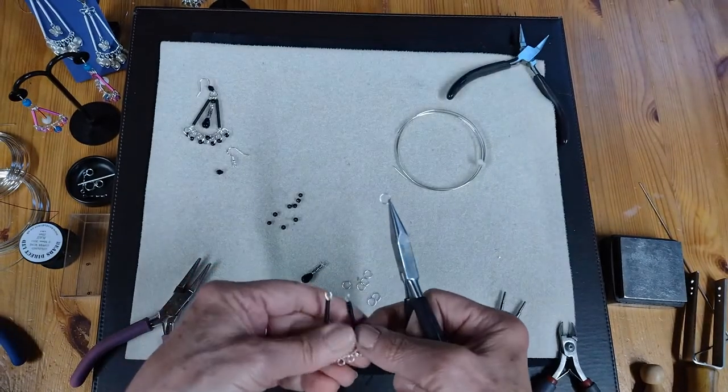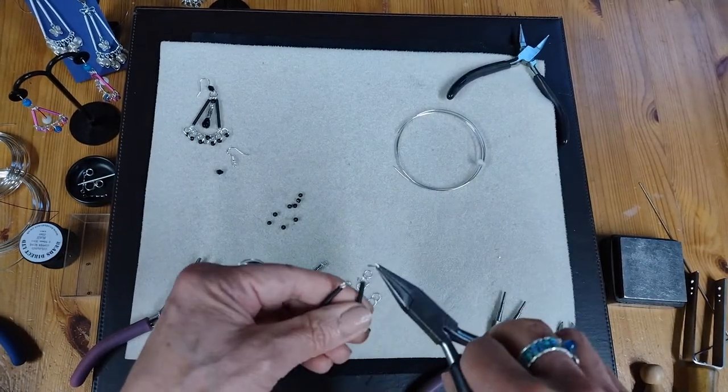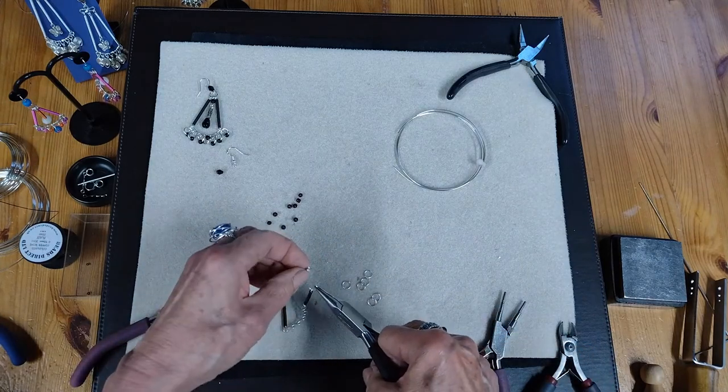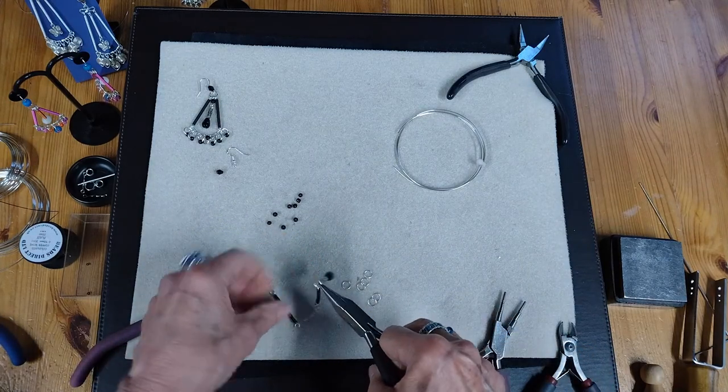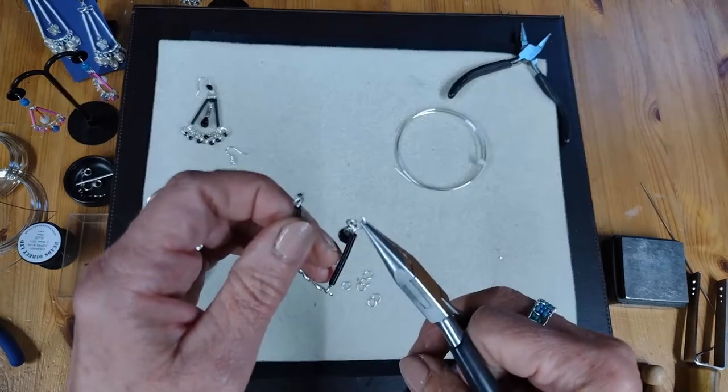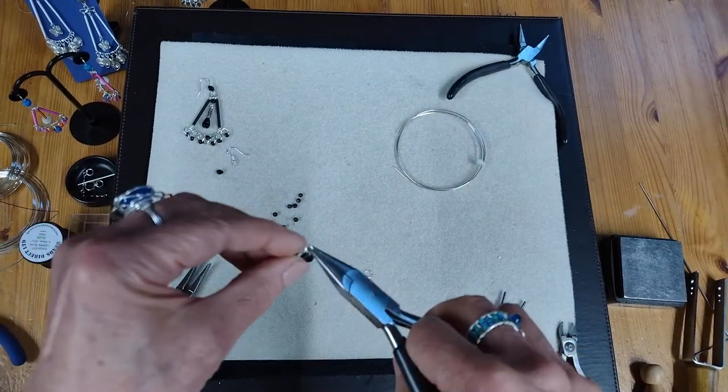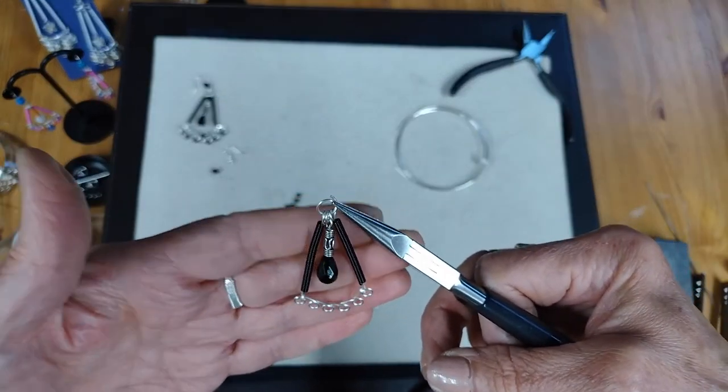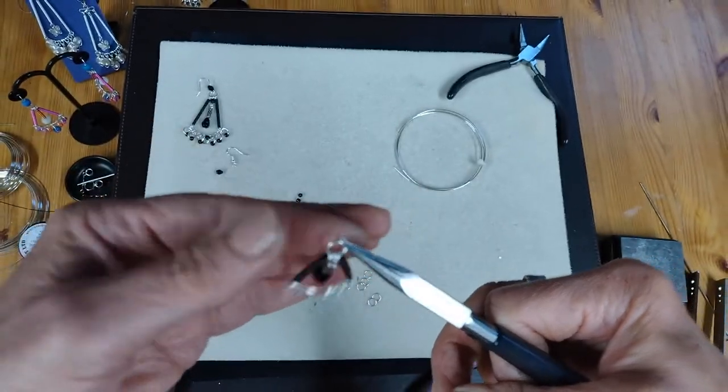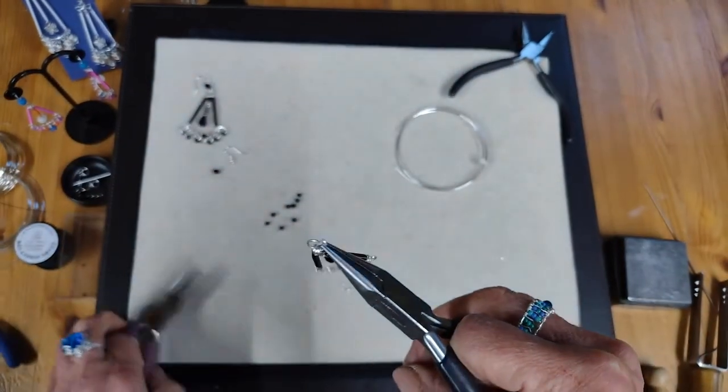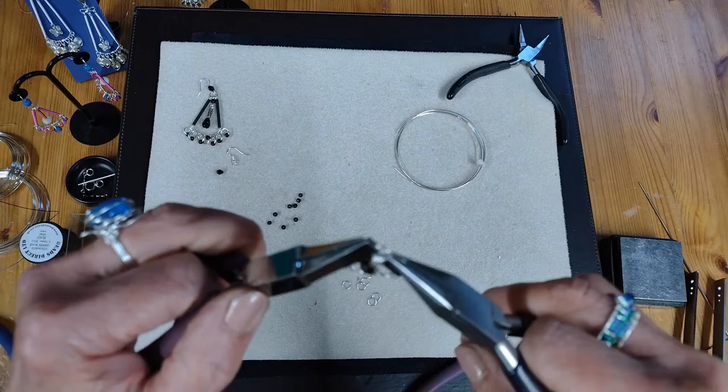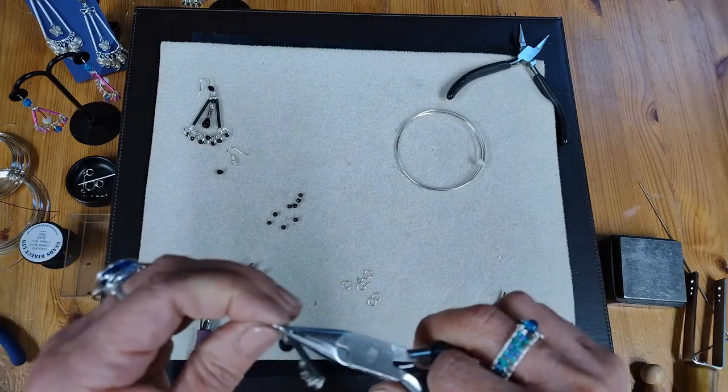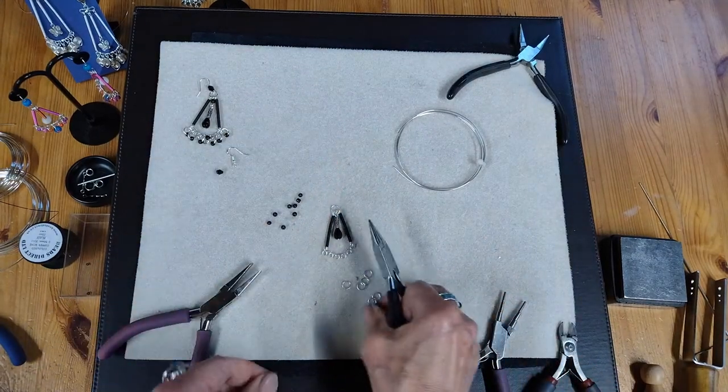So I'm opening up my big jump ring and I'm going to feed it through the top links from the coils on the side. Then I'm going to feed my center drop piece and then back through the other side of the earring. And that creates the triangle with the center swing pendant. And close that up. And that will obviously eventually go on the ear wire that you want to use. So there's the piece.